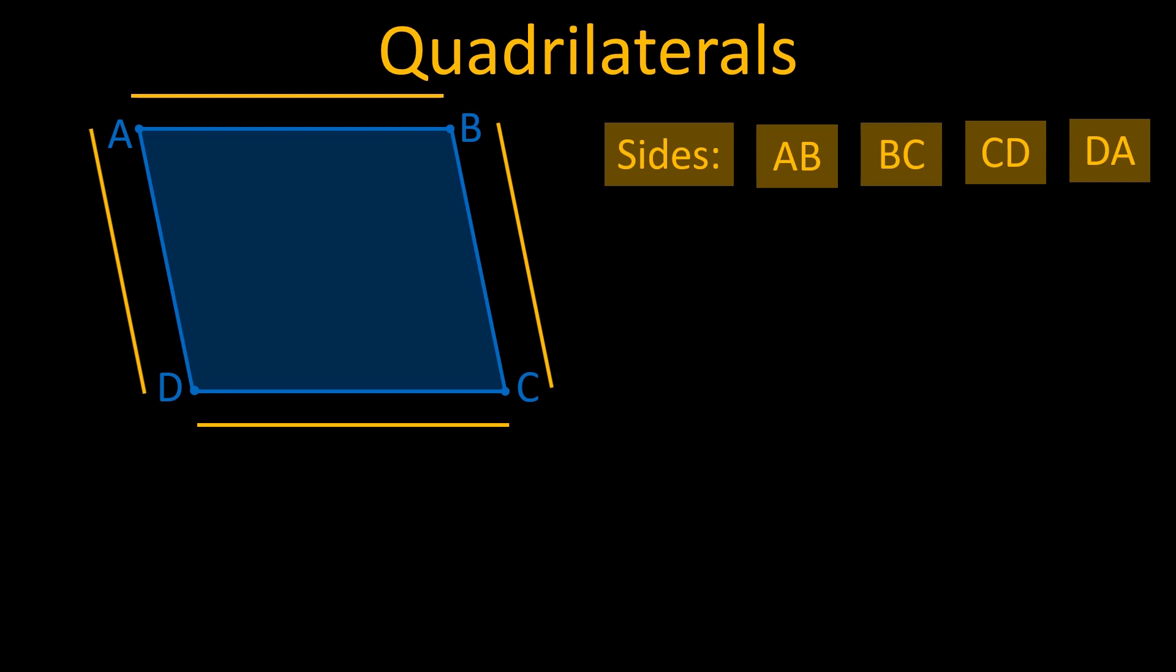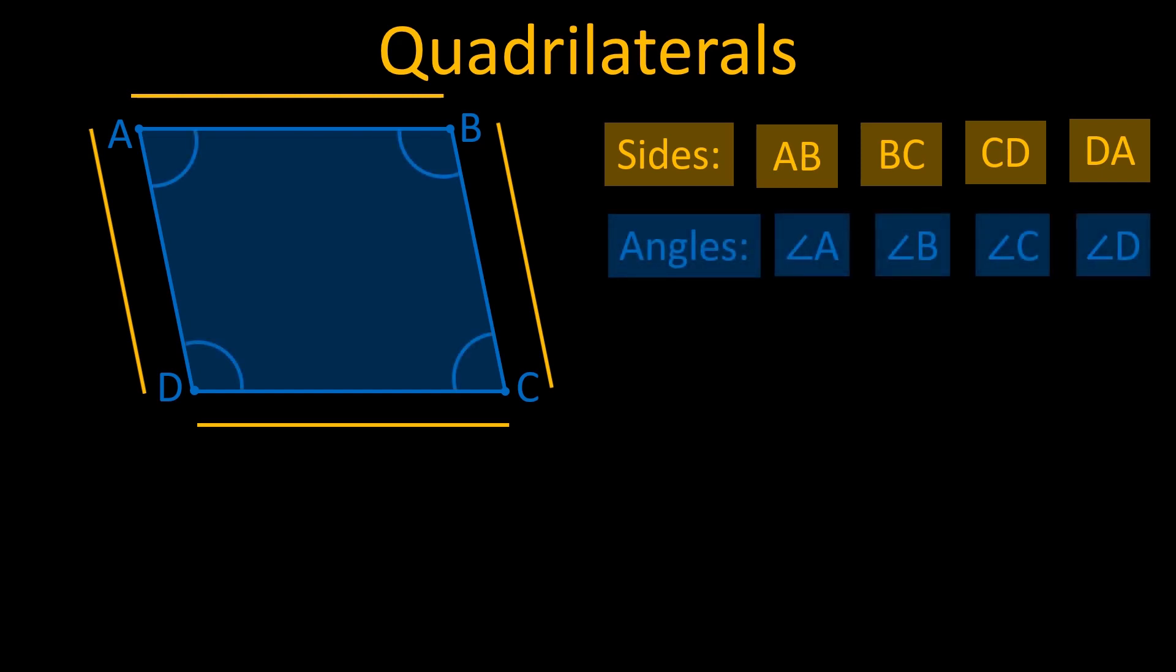Similarly, four angles are formed by the four sides of a quadrilateral. We can name the angles based on the vertex on which it is formed. So the four angles of the quadrilateral ABCD are angle A, angle B, angle C and angle D. We can also name these angles on the basis of the sides.